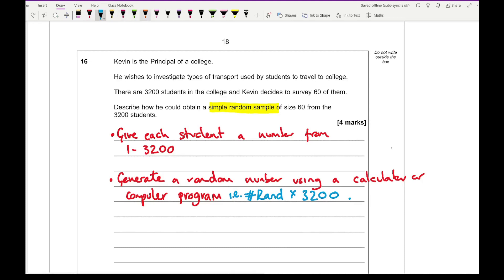The next thing we need to mention is that you ignore any repeats. And then basically the last one is you stop when 60 different numbers have been drawn. Something along those lines would be fine for the four marks.